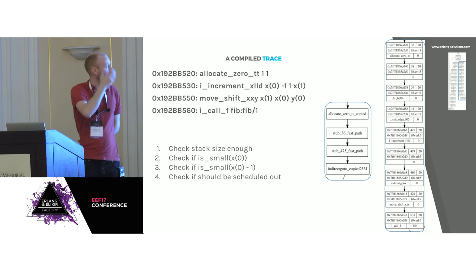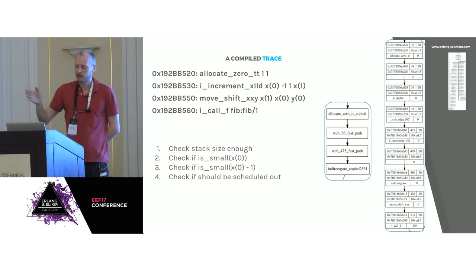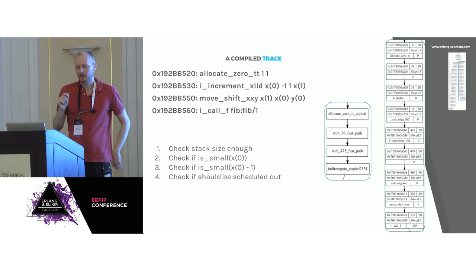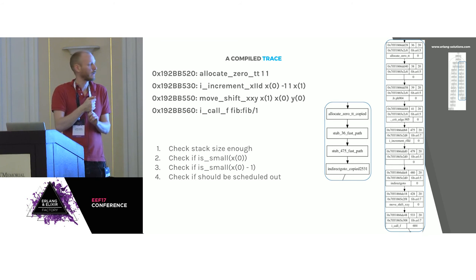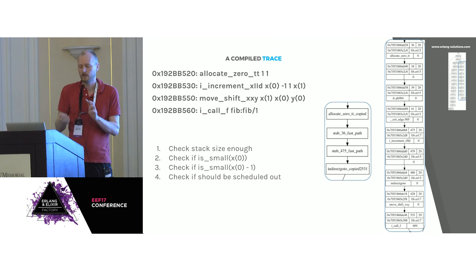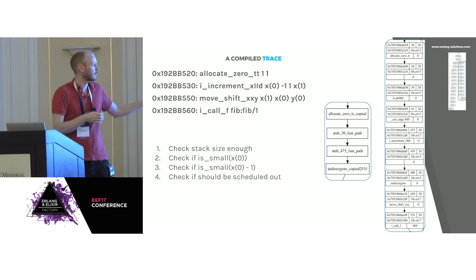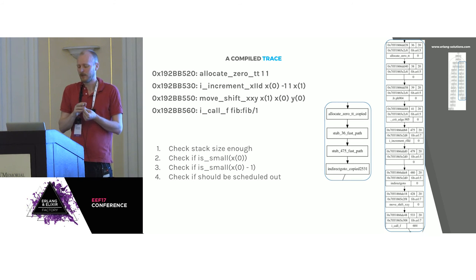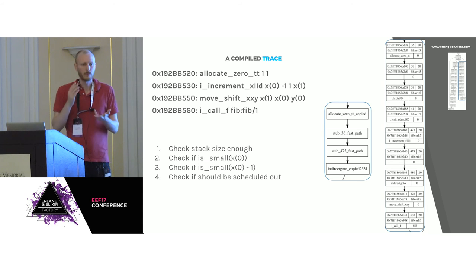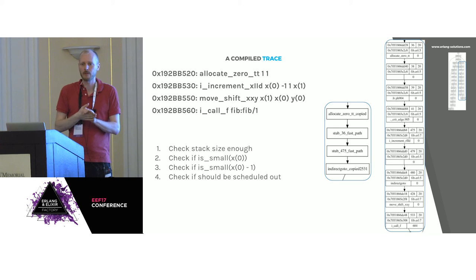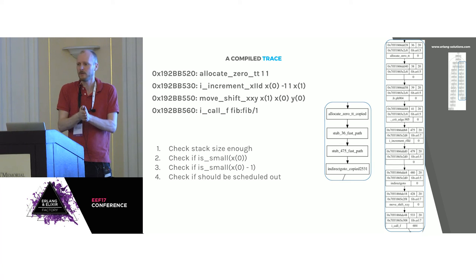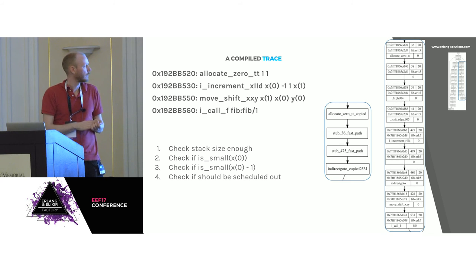The checks left in the trace are basically: check if we have memory on the stack, check if our argument is still a small integer, check if x0 minus 1 is still a small integer — a redundant check our optimization hasn't figured out yet — and check if we're supposed to be preempted. Those are the only checks remaining, and when those conditions occur, that's when we fall off the hot path.